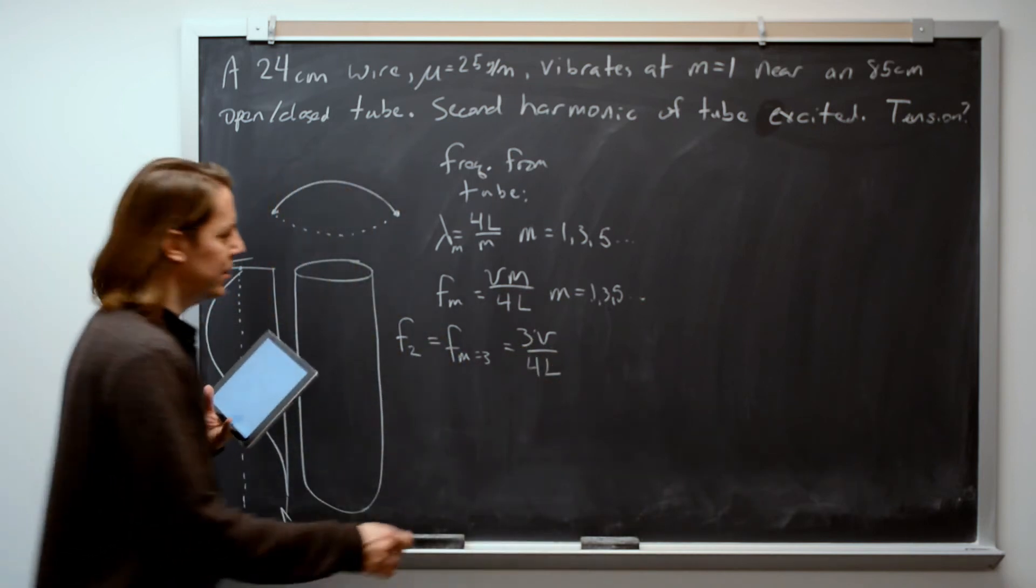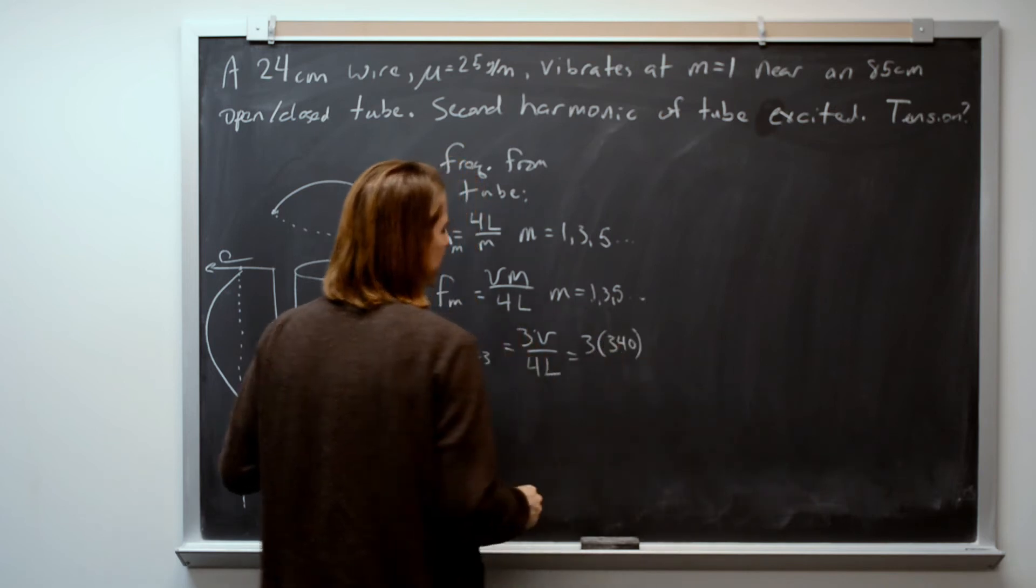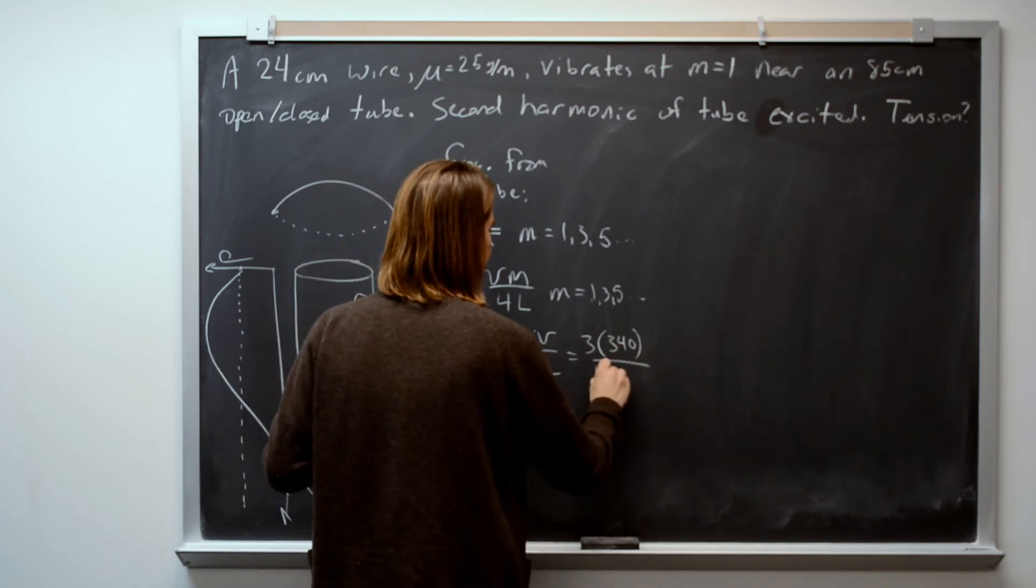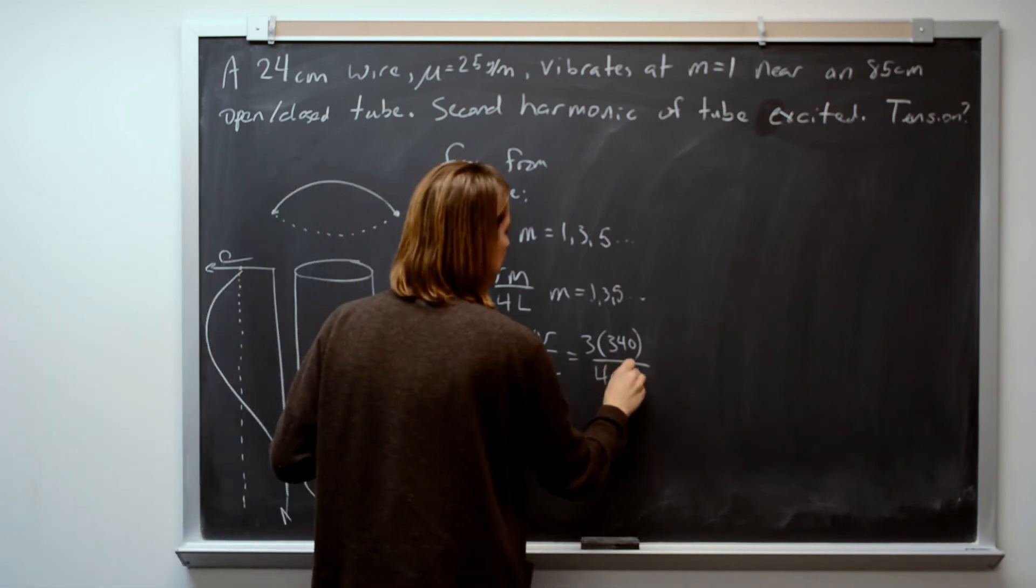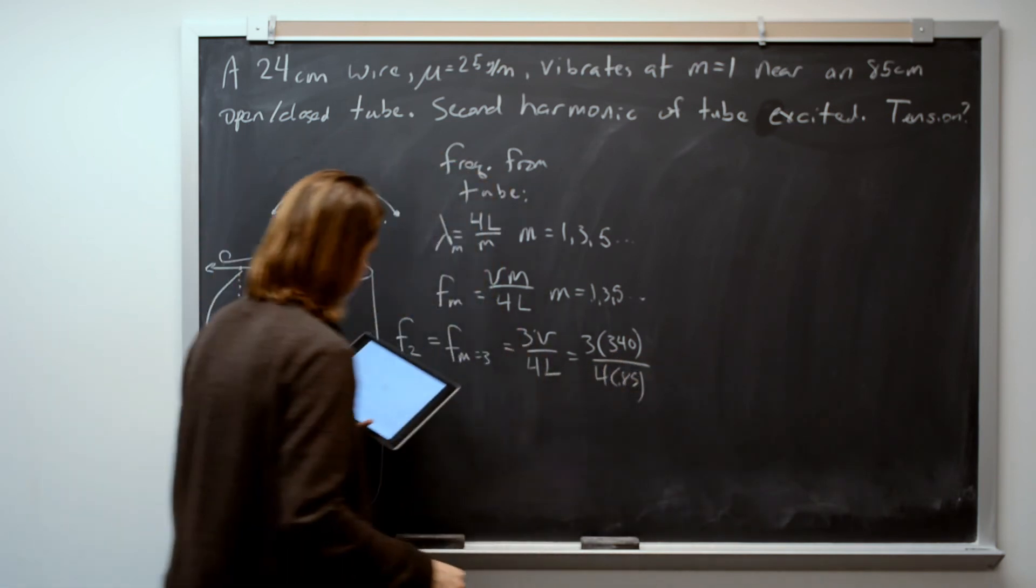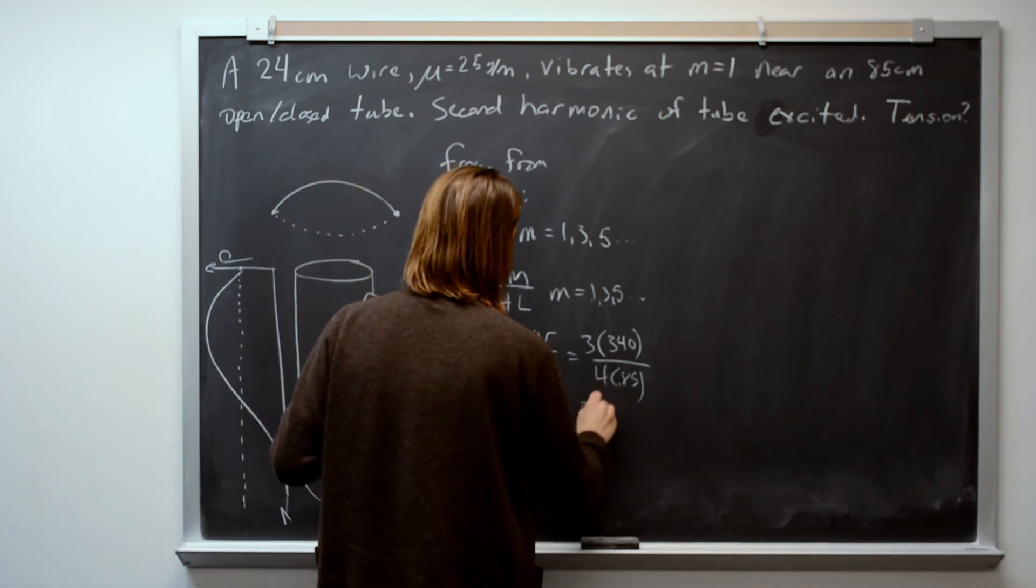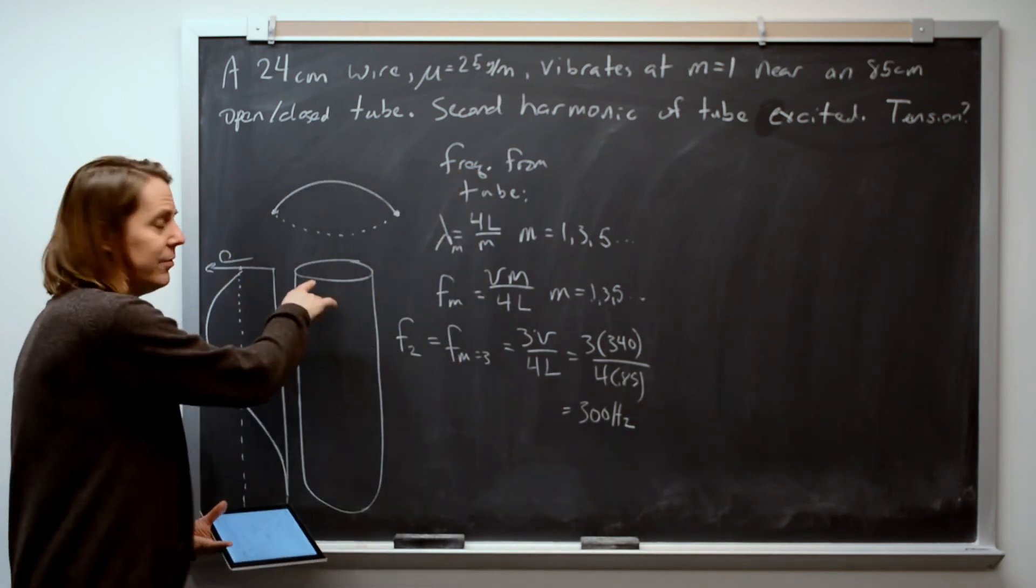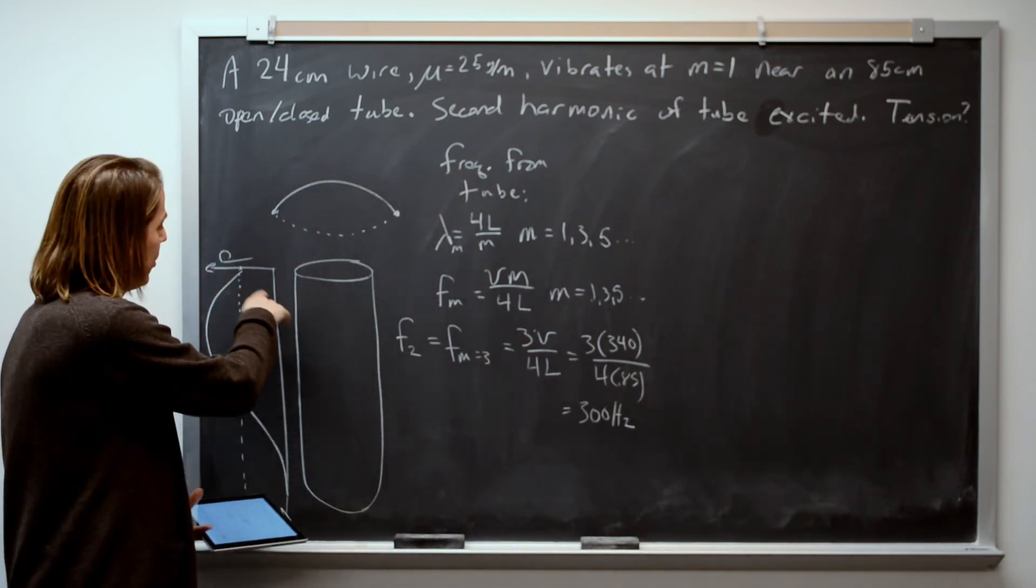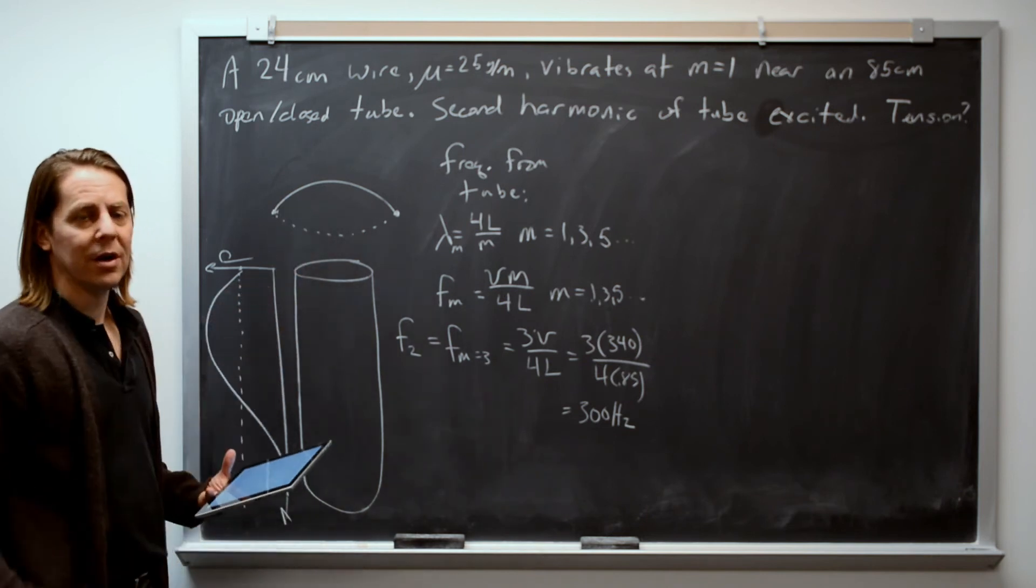So if we plug in our numbers, that's 3 times 340 meters per second over 4, and then the length of the tube is 0.85 meters. And for my numbers, I get 300 hertz. So that's the frequency of the second harmonic we're exciting here in the tube, and it must also be the frequency of this string.